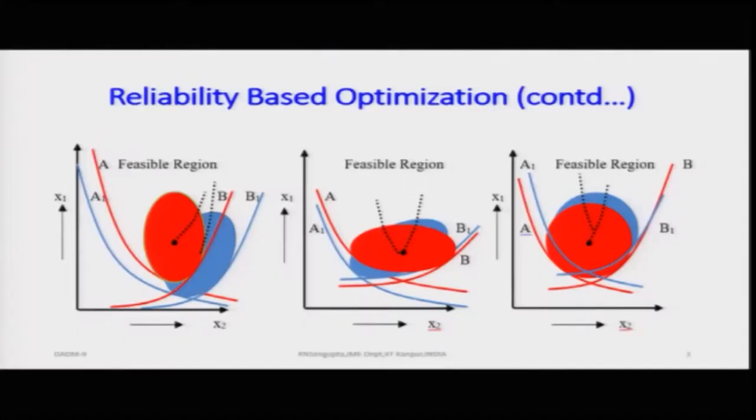Consider two cases: case one where the variance of X1 is greater than the variance of X2, and vice versa. The overall covered area determines how we apply the reliability-based optimization concept — finding the center of gravity of that area to obtain the reliable solution. Let us first discuss the diagram, and then consider the case where the variance of X2 is greater than X1 (X2 being along the Y-axis).